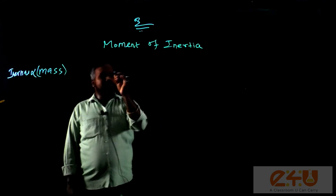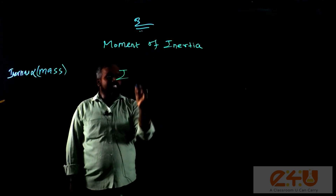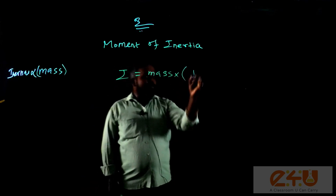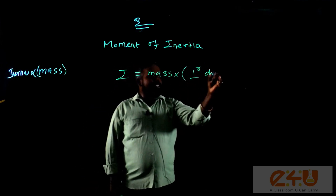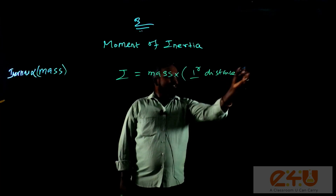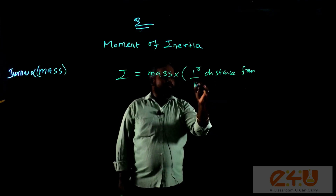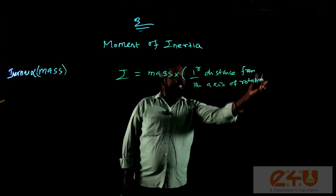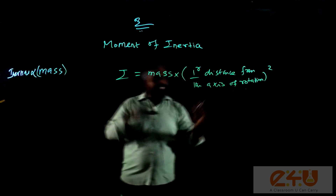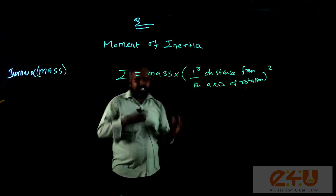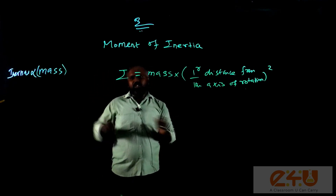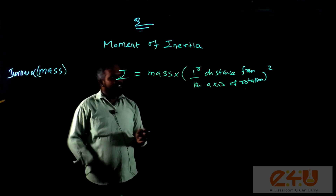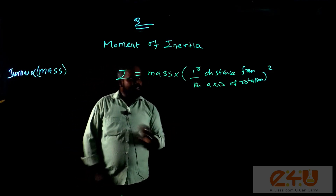That property is termed as moment of inertia, and it is given by I equal to the product of mass and the square of the perpendicular distance from the axis of rotation. The axis of rotation is a fixed axis about which the particles of the rigid body make a circular path — this motion is termed as rigid body rotation.